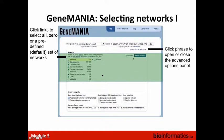I showed you opening the advanced options panel to select networks. If you don't select a network it gets assigned zero weight. Once you select the network, GeneMANIA assigns a weight either based on your gene list or based on some other measure of the relevance of that data source.